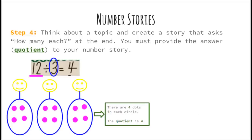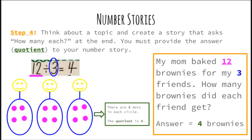Now the last step: think about a topic and create a story that asks 'how many each' at the end, and provide the answer or quotient. Since we used brownies earlier for equal shares, I will use that same topic. My division problem is 12 divided by 3 equals 4. 3 is my divisor, 12 is my dividend. I have 3 people with 12 brownies to give, and I gave 4 brownies to each person. Here is my story: 'My mom baked 12 brownies for my 3 friends. How many brownies did each friend get?' My answer is 4 brownies.